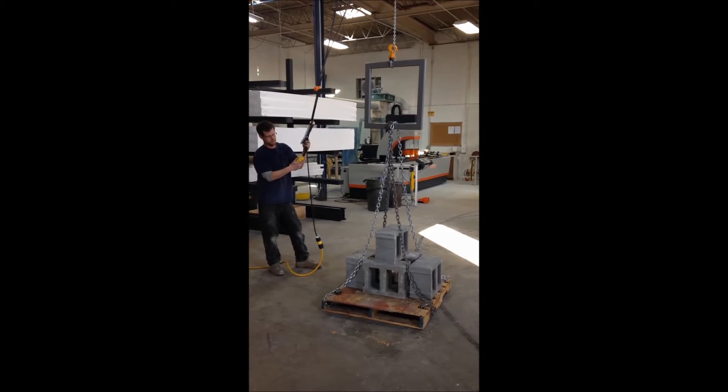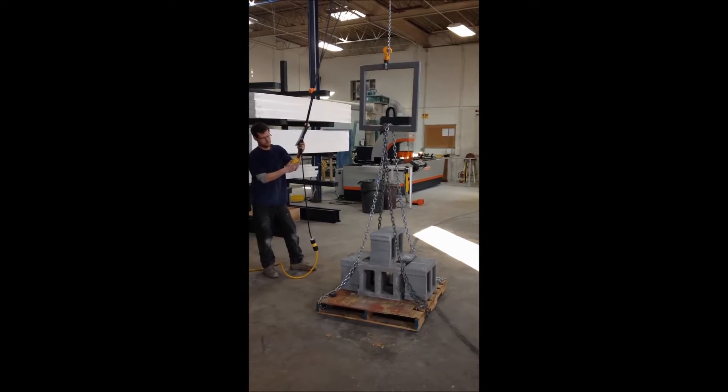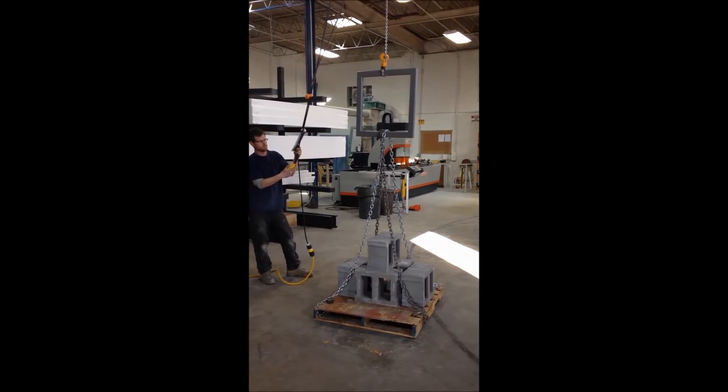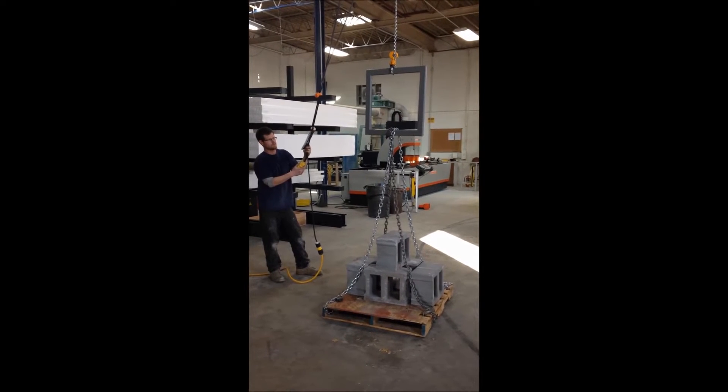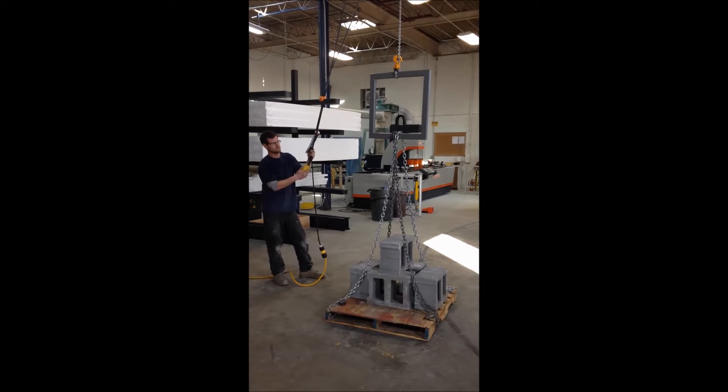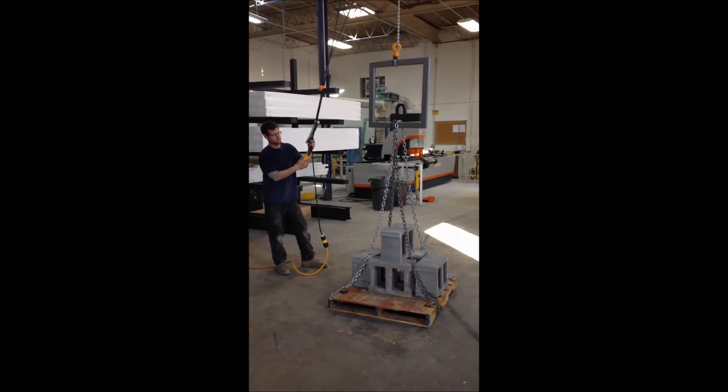So we're lifting up about 400 lbs here and all of that weight is focused where the chains meet up right there in the middle of the sash, so the weight isn't even distributed evenly over the sash, we're just focusing it all on one point.